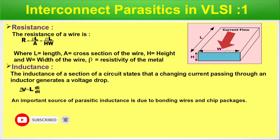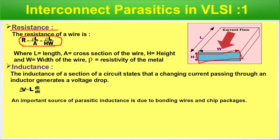Now interconnect parasitics in VLSI. The resistance of a wire is ρL/A — where A is the cross-sectional area, the height times width. Inductance of a section of circuit states that a changing current passing through an inductor generates a voltage drop proportional to the change of current with time: ΔV ∝ L·dI/dt. An important source of parasitic inductance is due to bonding wires and chip packages, where connectivity to the outer world introduces non-negligible inductance during switching.